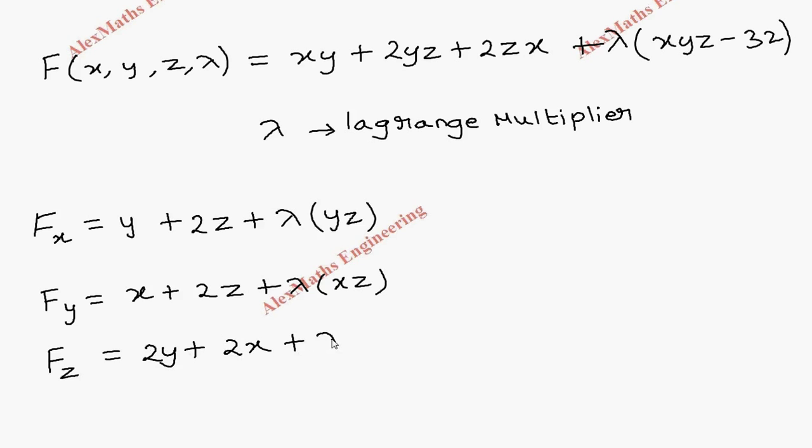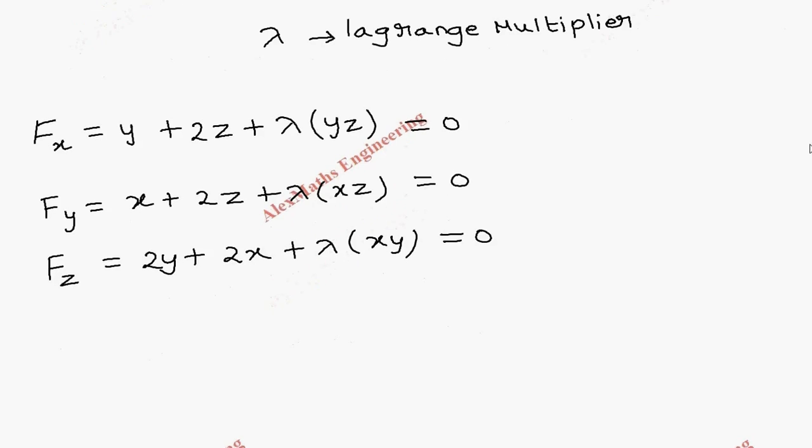Now by condition we have to equate these three terms to 0. From the first equation, if I take this lambda yz to the other side, we get y + 2z = -λyz.